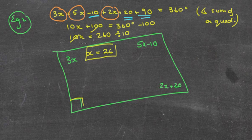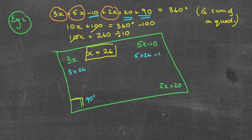Now they might have an add-on question which says find the value of each angle. In that case, this is 90 degrees, this is 3 times 26, this would be 5 times 26 minus 10, and this would be 2 times 26 plus 20. You can put those values into a calculator to get the exact values of each of those four angles. And that's pretty much it for quadrilaterals.